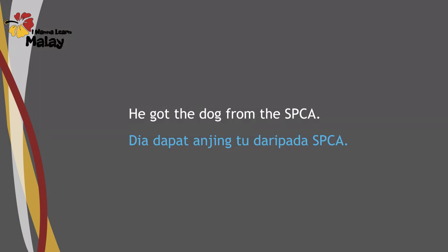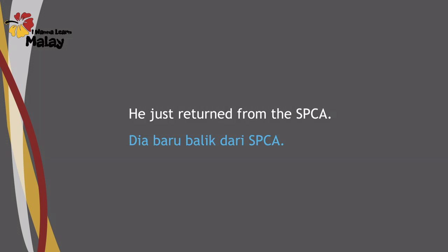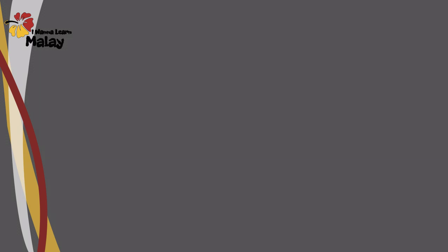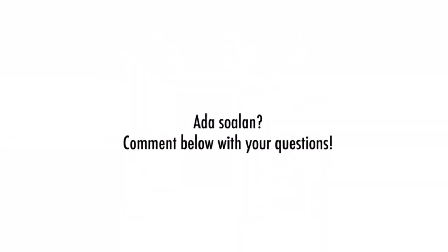For example: 'He got the dog from the SPCA' — the correct version is daripada SPCA, because SPCA is an entity or institution. But if you say he just returned from the SPCA — meaning he is coming from a certain location — you use dari: Dia baru balik dari SPCA. You can't use daripada here, because it's referring to a location, not an entity. That's all for this video. If you have any questions, please drop a comment below. Thank you.